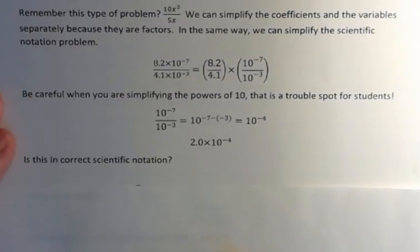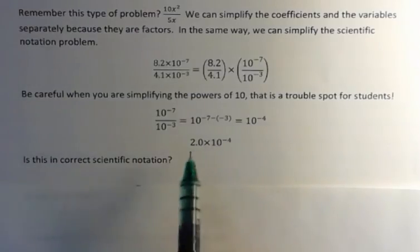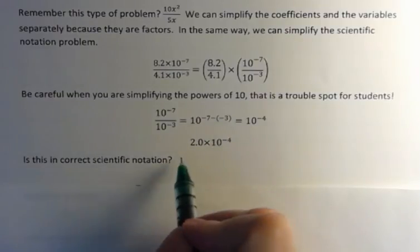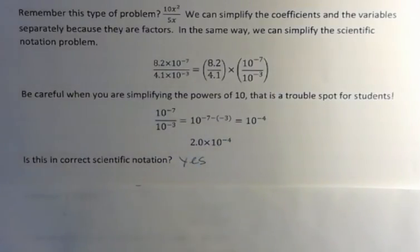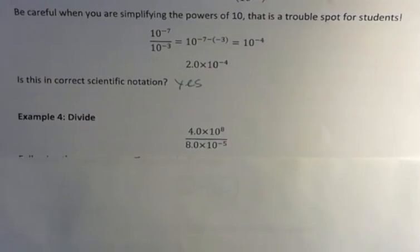My question for you is, is this in correct scientific notation? This number is between 1 and 10, so yes. This is an integer, so yes. Remember it's okay to have negative exponents. So yes, that's in correct scientific notation.